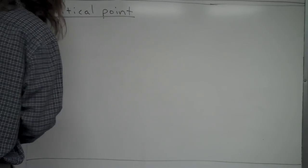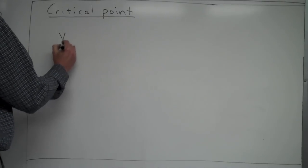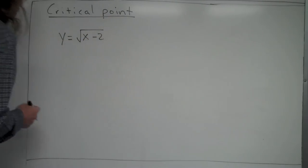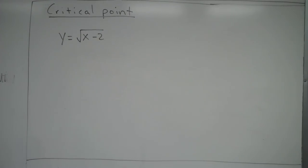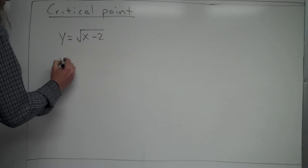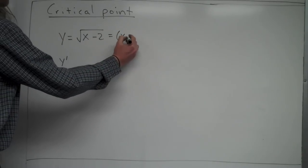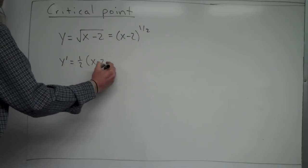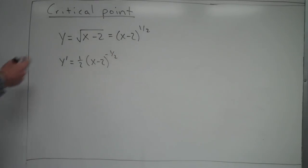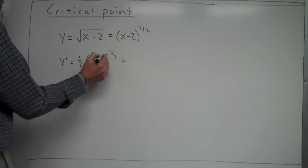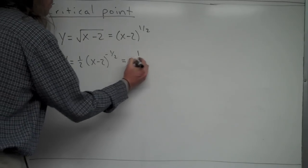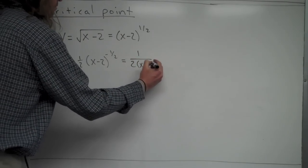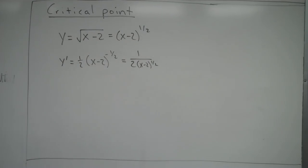Now let's look at another case. Say we have y = √(x - 2). We need to find the x value of the critical point. You always have to look at the derivative for critical points. Rewriting as (x - 2)^(1/2), I bring the 1/2 down, keep the inner function, subtract 1 from the exponent to get negative 1/2, and multiply by the derivative of the inner function, which is just 1.